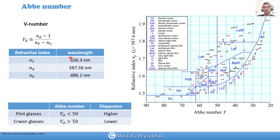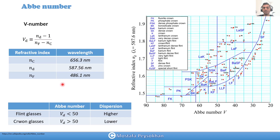This is the definition of Abbe number, but now we need to talk about why the Abbe number is important and what it represents. Let's say we have a material that is very dispersive — it means that the refractive index changes a lot by changing the wavelength. In that case this denominator should be a big number, so when the denominator is big, the V number should be smaller.